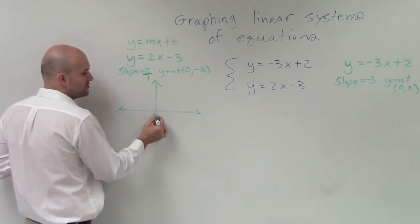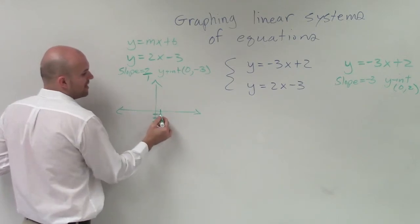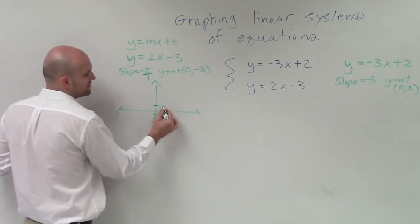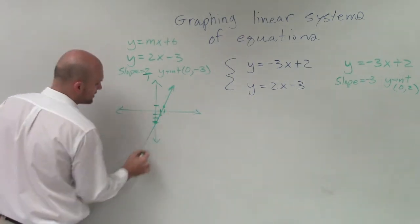Well, since the 2 is positive, I'm going to go up 2 units. And since the 1 is also positive, I'm going to go to the right 1. And I can continue this pattern indefinitely creating my line. So that's my one linear equation.